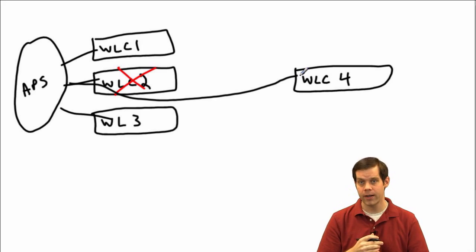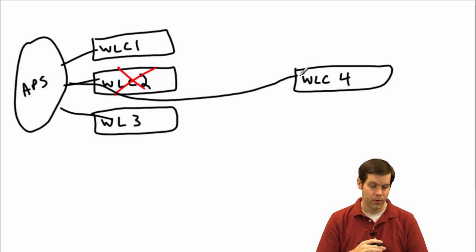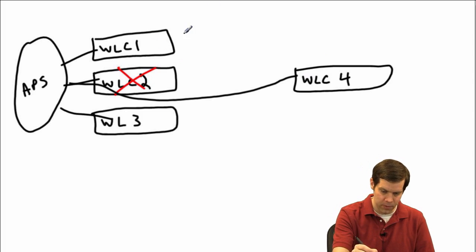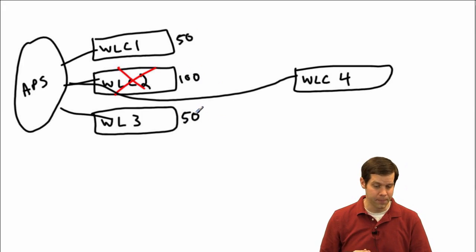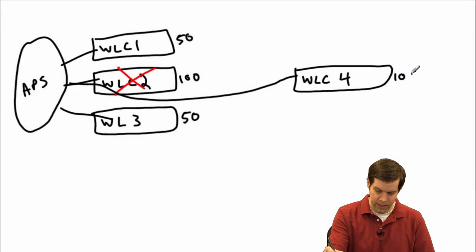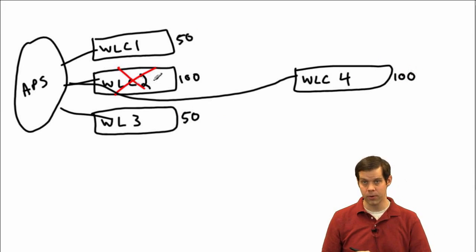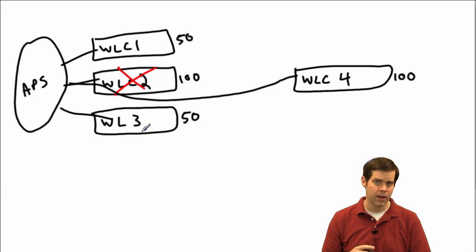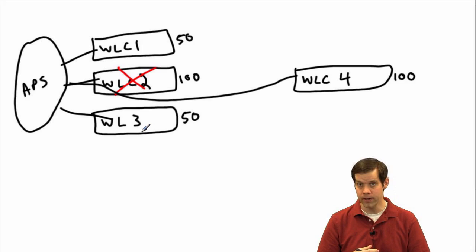In terms of licensing: on older code prior to 7.4, WLC4 needed at least as many licenses as the largest of the N controllers. For example, if Controller 1 had 50 licenses, Controller 2 had 100, and Controller 3 had 50, Controller 4 should have at least 100 licenses — otherwise it couldn't fully back up Controller 2. If it has 100 licenses, technically both Controllers 1 and 3 could go down and Controller 4 could still pick up the slack. You need to game your licensing based on how many simultaneous controller failures you want to survive.